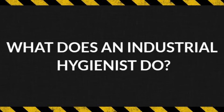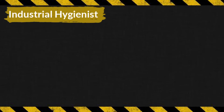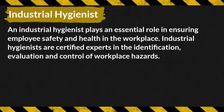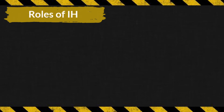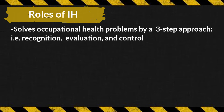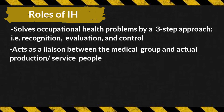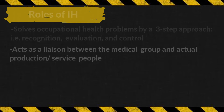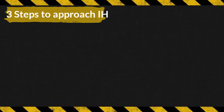What does an industrial hygienist do? An industrial hygienist plays an essential role in ensuring employee safety and health in the workplace. Industrial hygienists are certified experts in the identification, evaluation, and control of workplace hazards. Their role is to solve occupational health problems using a three-step approach: recognition, evaluation, and control. They also act as a liaison between the medical group and actual production or service personnel.